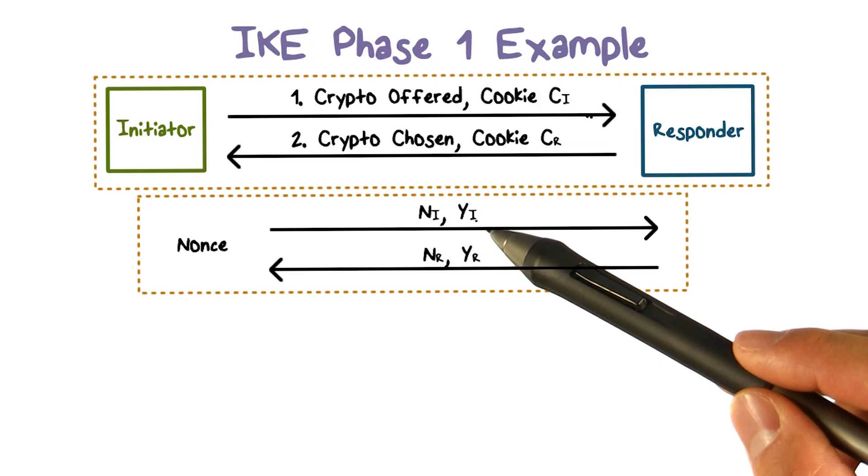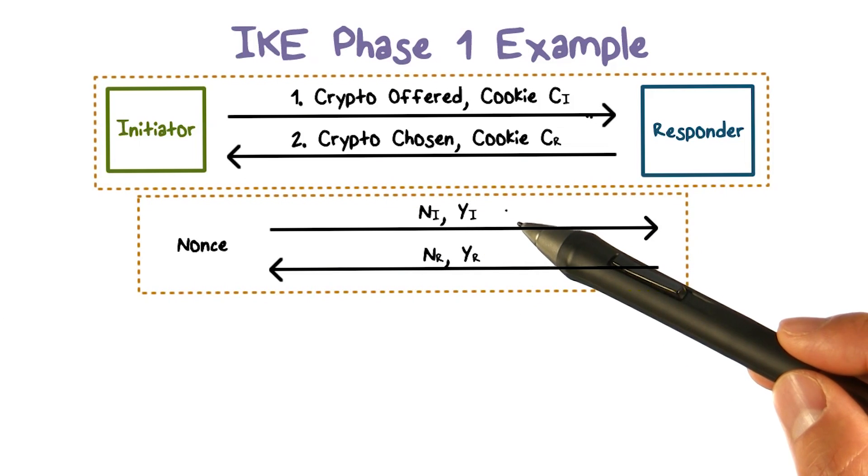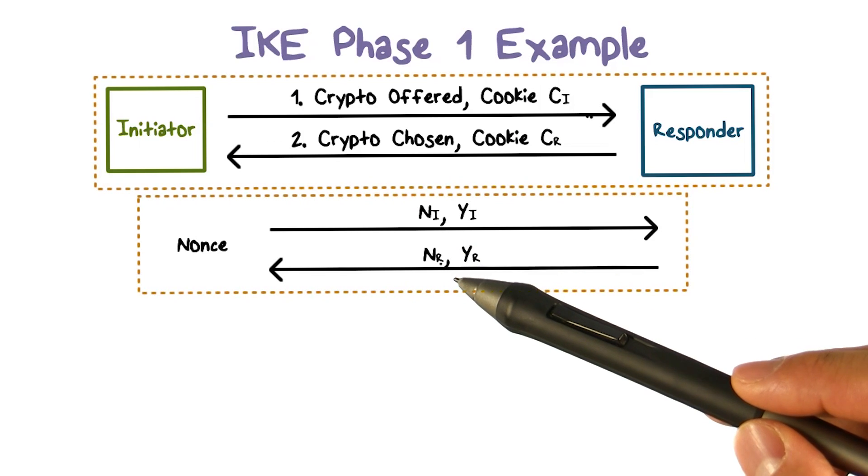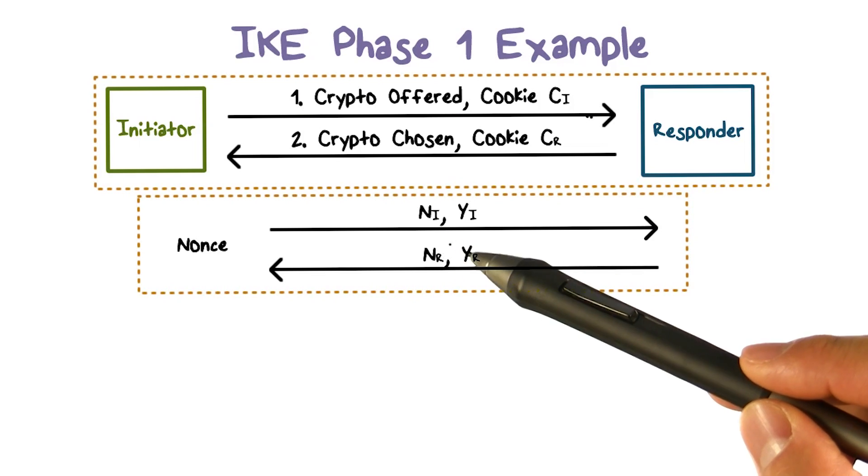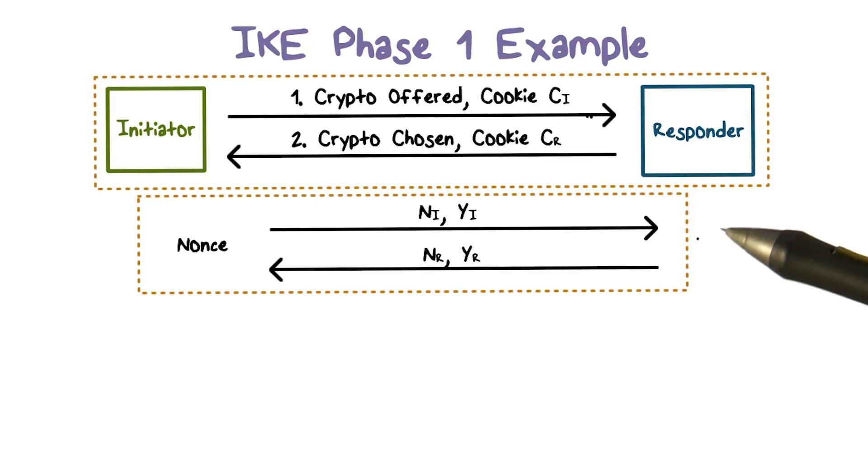Yi and Yr are the public components of the Diffie-Hellman key exchange, and Ni and NR are the nonce values of the initiator and the responder. Third,